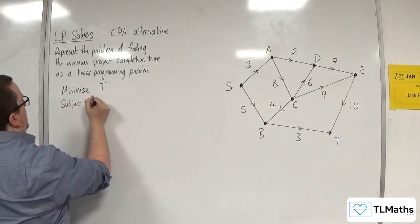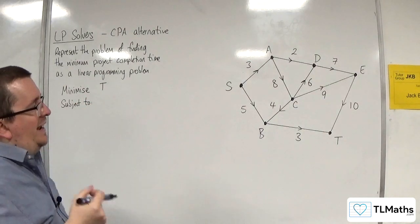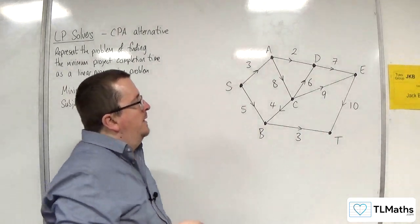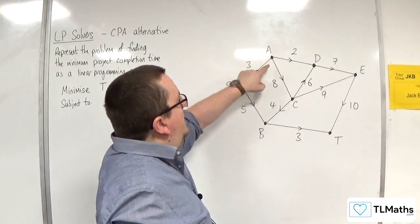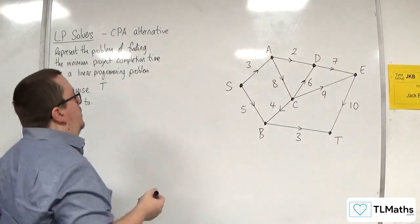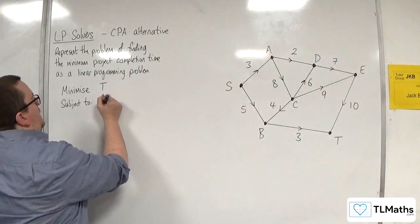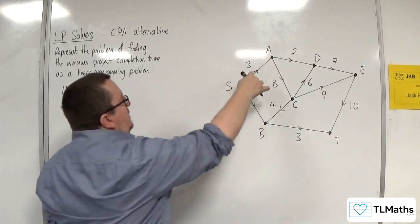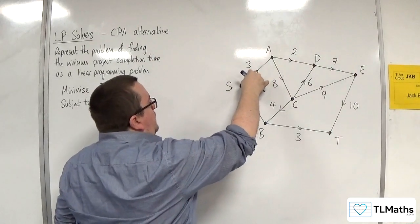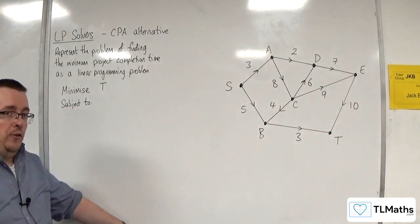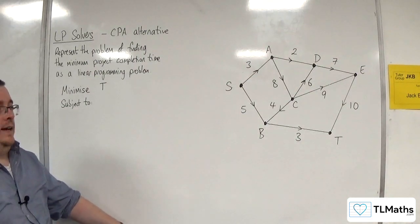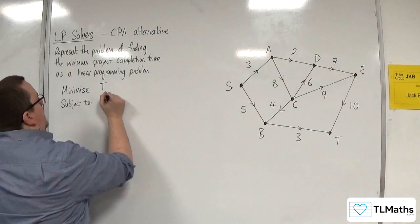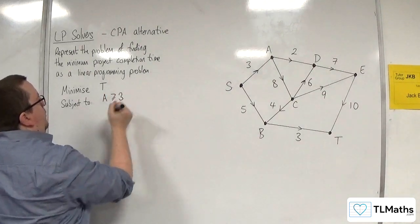Now for the constraints, subject to... We're going to take each of the vertices in turn. Let's start at A. In order to get to A, I need to do the activity that is 3 hours long. I need at least 3 hours in order to get to A. So A has got to be at least 3.